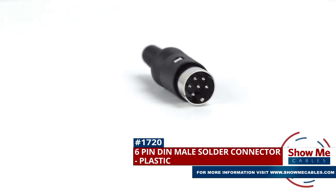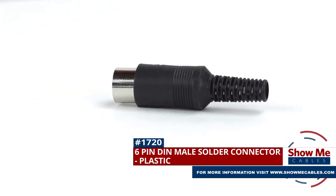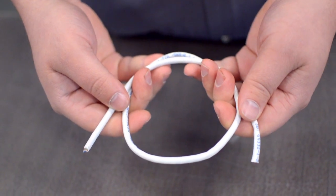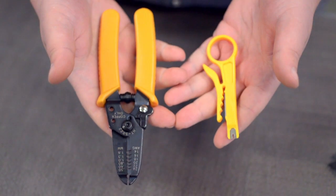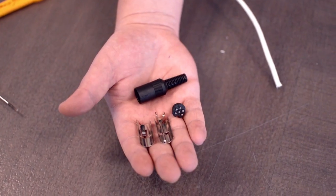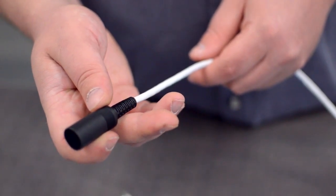This is the 6-pin DIN male solder connector. To install, you will need the following items: low voltage cable, wire strippers, solder and soldering iron, and the DIN connector.